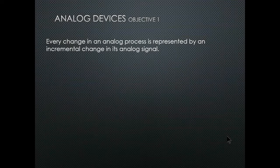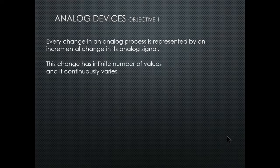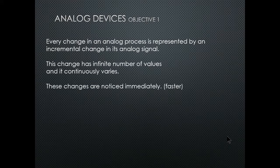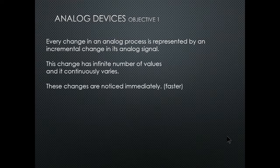Analog devices: every change in an analog process is represented by an incremental change in its analog signal. These signals are infinite — the change has an infinite number of values and is continuously varied. It can be linear up or down but it's an infinite number of values. Changes are noticed immediately, and going analog to analog is much quicker — milliseconds faster than having to convert from analog to digital and back.